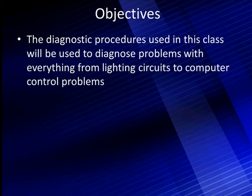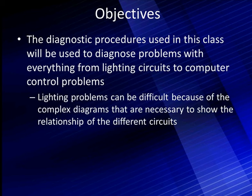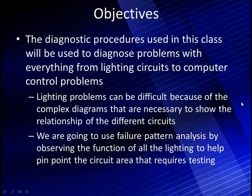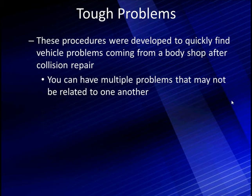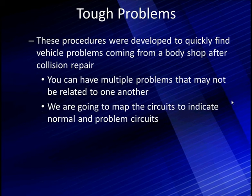We're going to spend a lot of time on lighting circuits because, quite honestly, they can be very confusing. Lighting problems can be difficult because of the complex diagrams that span four or five pages, which is necessary to show the relationship of all the different circuits. We're going to use failure pattern analysis by carefully observing the function of all the lighting to pinpoint problem areas. These procedures were developed to quickly find vehicle problems, particularly with vehicles coming from a body repair shop after a collision repair. You may have multiple problems that don't relate to each other — multiple failures, which is very common in a collision.